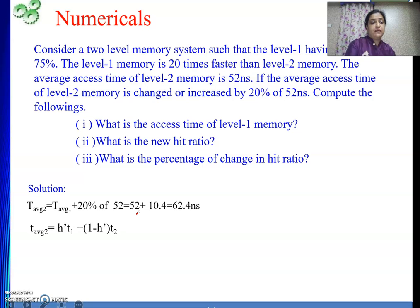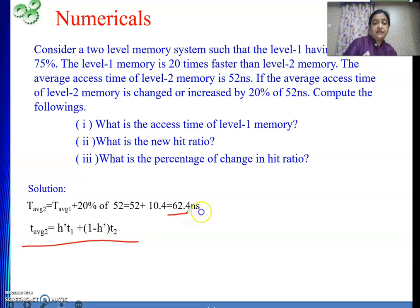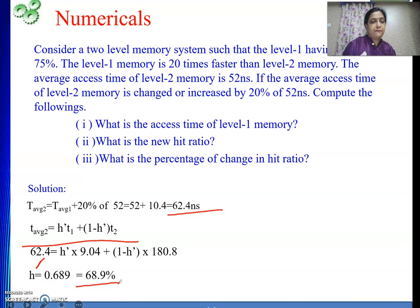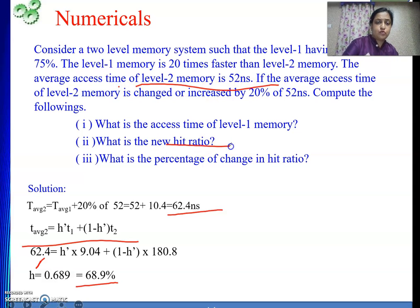Now we know T1 is 9.04 nanoseconds, T2 is 180.8 nanoseconds, and T-average-2 is 62.4 nanoseconds. Putting all these values into the formula, we can find H-dash, the new hit ratio. H-dash comes out to be 68.9%. Previously it was 75%, and now as average access time has increased, the hit ratio has decreased. Whenever you see the average time increasing, you should expect the hit ratio to be lower than 75%.